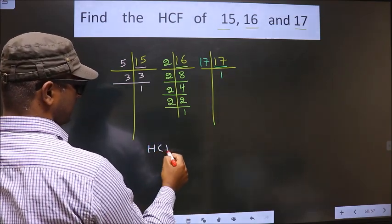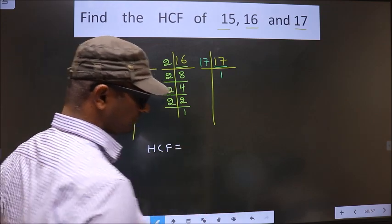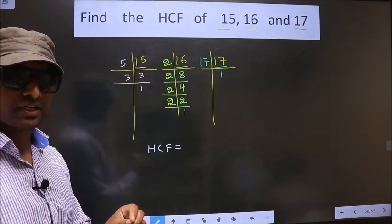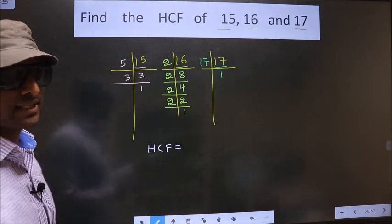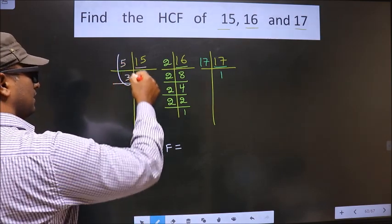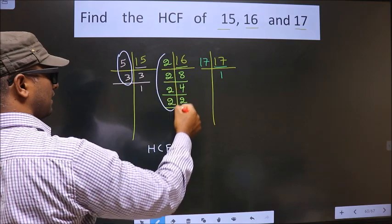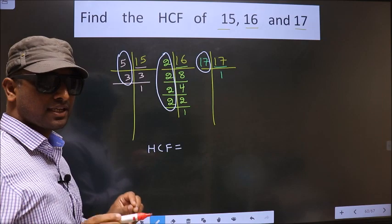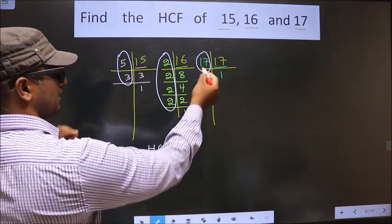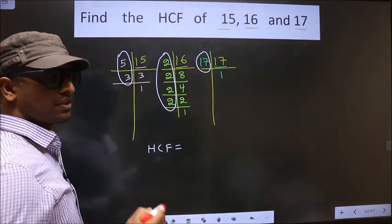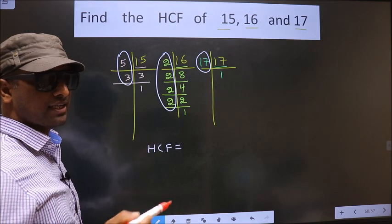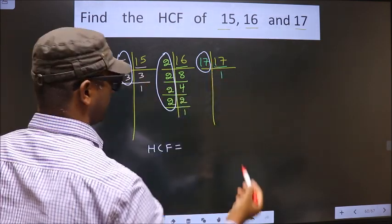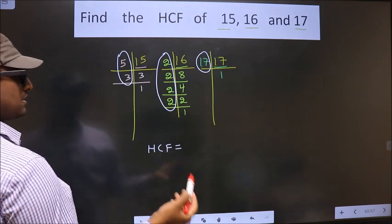So now our HCF is — HCF is the product of numbers that are present here and here and also here. So now we should find the numbers that are present in all 3 places. We should find the numbers that are present here and here and also here.